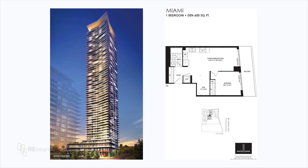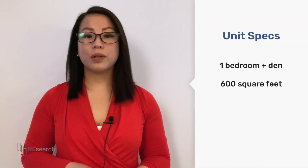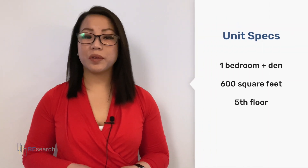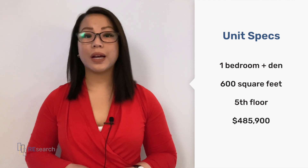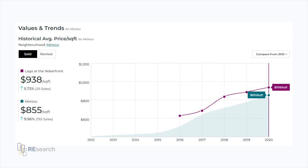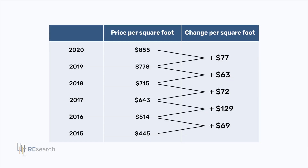Let me walk you through the projected profit of my first unit at Water's Edge by the Conservatory Group. This development is in the Mimico neighborhood — I have another video where I go into depth on how I decided on this unit. It's a one-bedroom plus den, 600 square foot unit on the fifth floor that was purchased for $485,900 in March 2018.